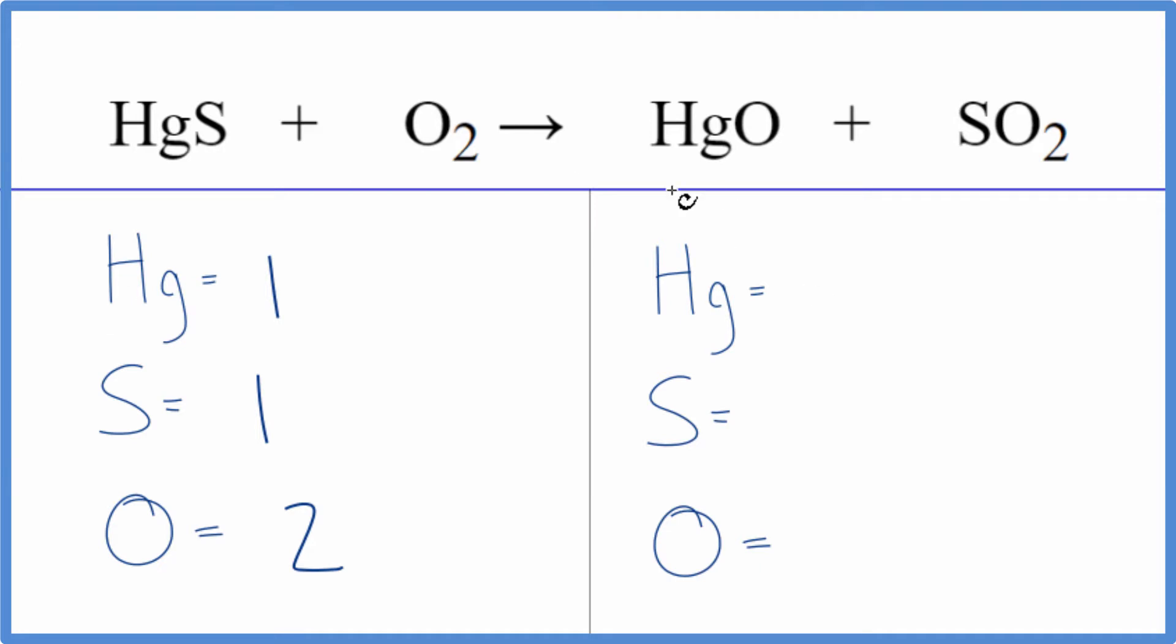On the product side we have one mercury, one sulfur, and then one oxygen plus don't forget these two here, so we have three oxygen atoms. Probably the best thing to do at this point is try to get this to an even number.